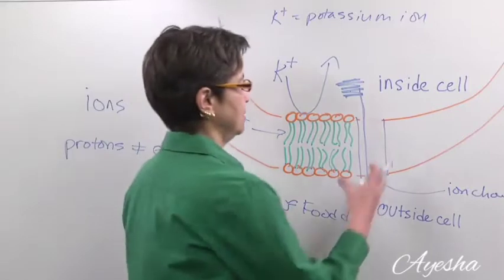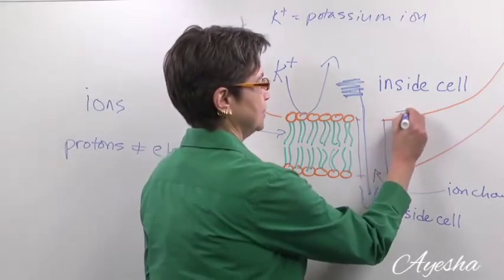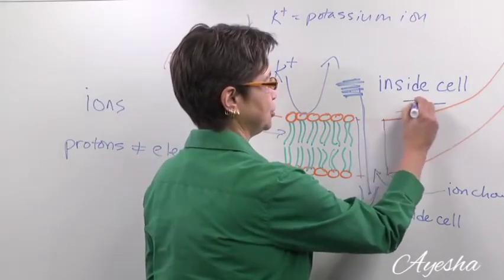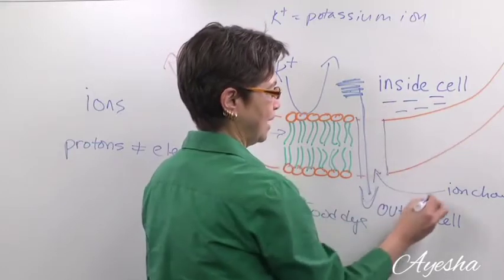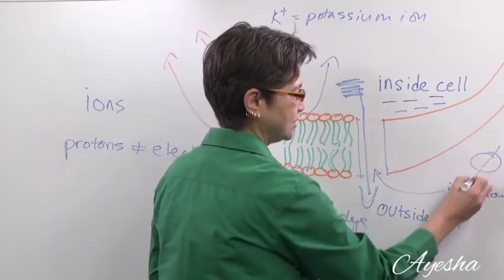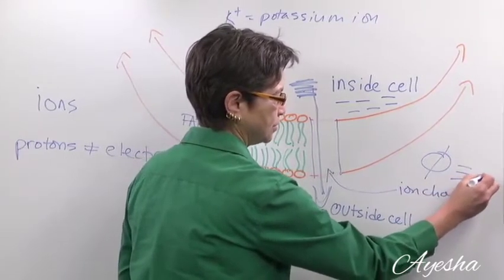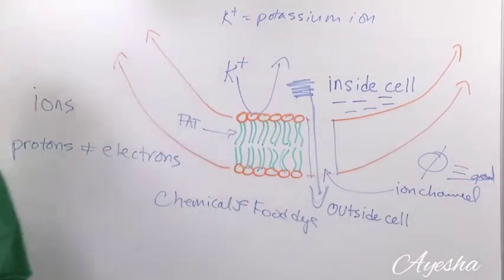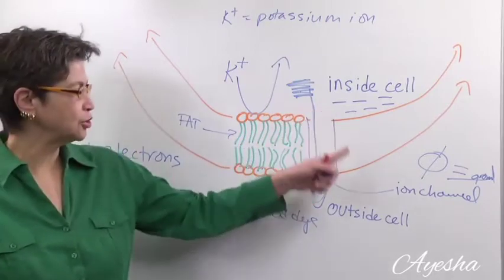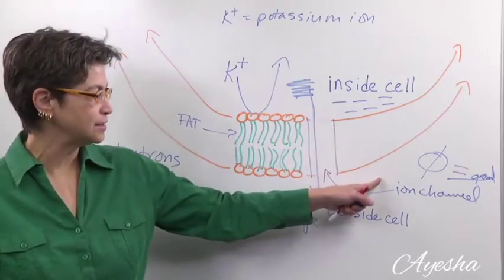But on the other hand, the cell is actually negatively charged. And outside, this is zero. It's like being ground. It's grounded. It's got a lightning rod there. So this is negatively charged and this is zero.